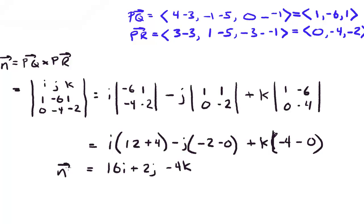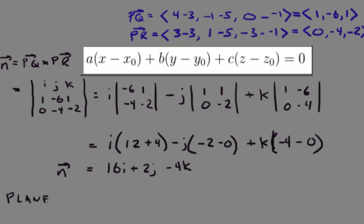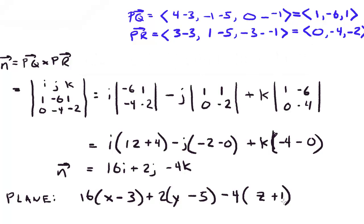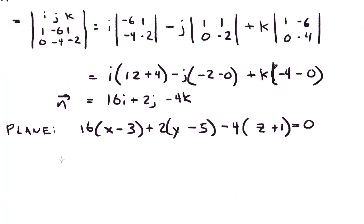So this is our normal vector. And to define the equation of a plane, that's all we need. We need a normal vector and then a specific point on the plane. All right, so it's going to be 16(x - 3) plus 2(y - 5) minus 4(z + 1). And then we have to set that equal to 0. So this is the equation of a plane.